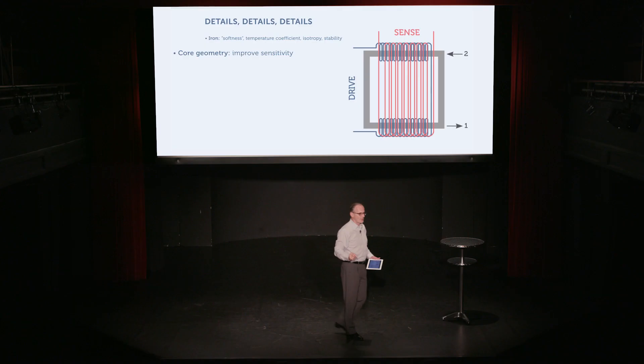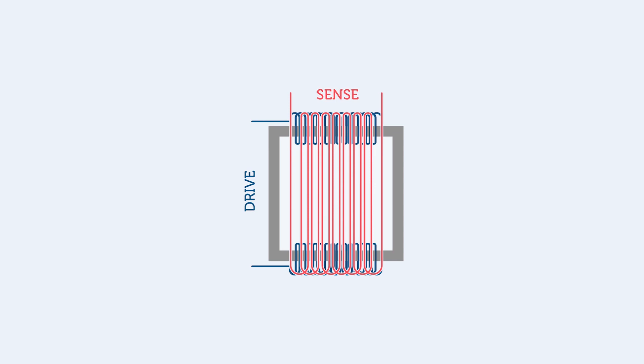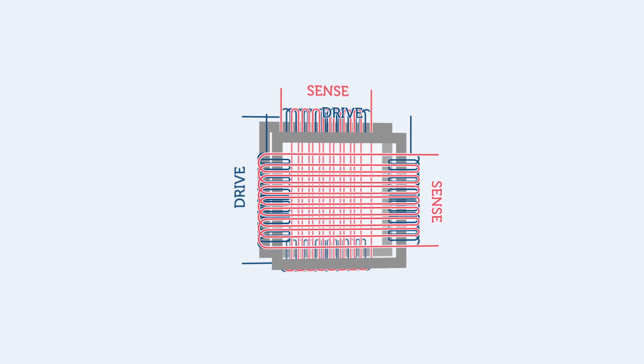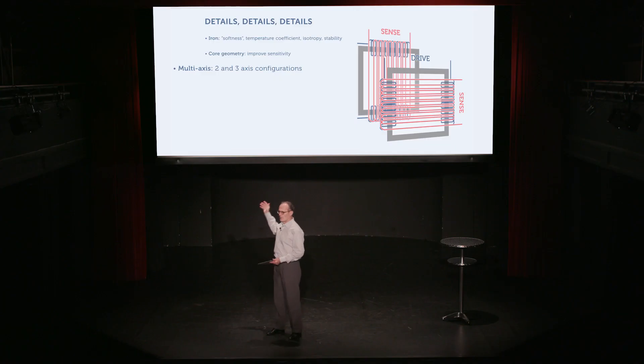And the sense coil is only sensitive to that external field that is sucked in and pushed back out as the iron goes in and out of saturation. Now we see that we have a square and we've only used two sides of the square. We can use the other two sides of the square to make another sensor, a second flux gate sensor, that is sensitive in the orthogonal axis. And therefore, all of a sudden, we have a two-axis sensor. And we can make a three-axis sensor by superimposing something in the other direction. So as you can see, it's actually quite straightforward to make a multi-axis sensor.